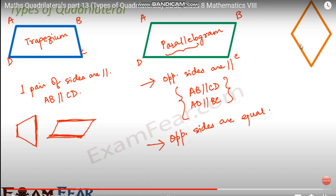The special characteristics of a parallelogram are: two pairs of opposite sides are parallel, two pairs of opposite sides are equal in length, two pairs of opposite angles are equal in measure, the diagonals bisect each other, one pair of opposite sides is parallel and equal in length, and adjacent angles are supplementary.